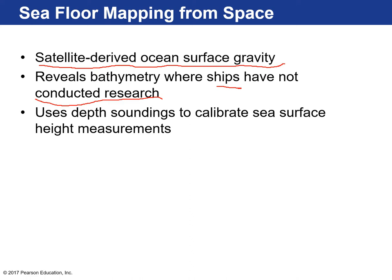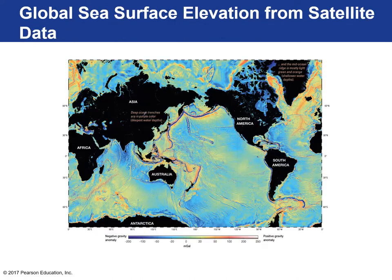Depth soundings were used to calibrate sea surface height measurements to improve the data. On Google Earth in satellite mode, areas shown in blue are the deepest parts of the ocean floor, while yellow, red, and white areas are shallower areas.